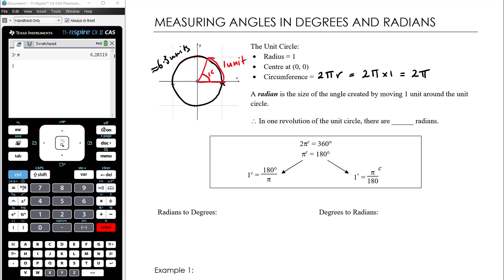In one revolution of the unit circle: the circumference is 2π units long, and if walking one unit creates one radian, then in one complete lap of the circle we walk 2π units and therefore create an angle of 2π radians. So the key conversion understanding is that 360 degrees is the same as 2π radians.